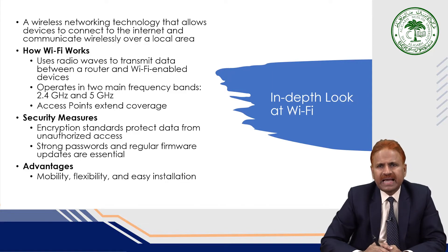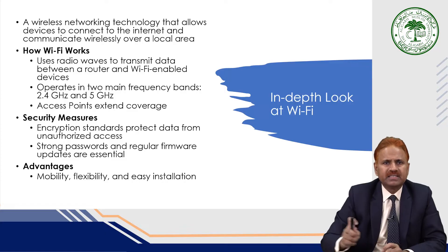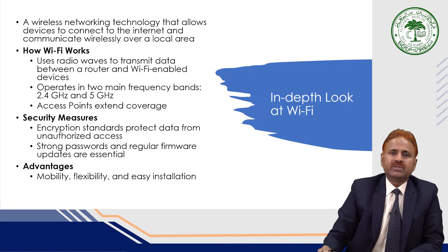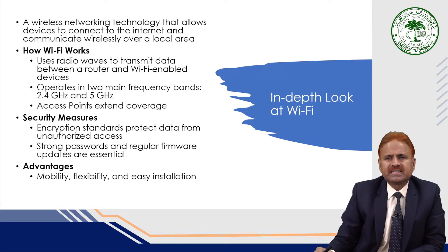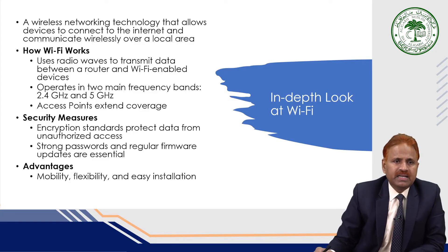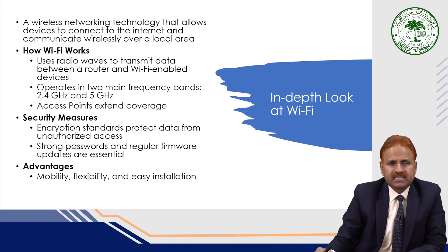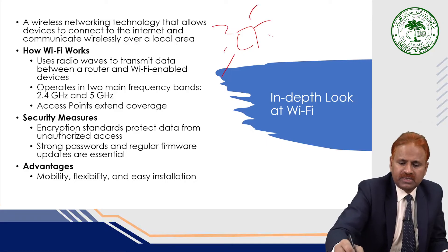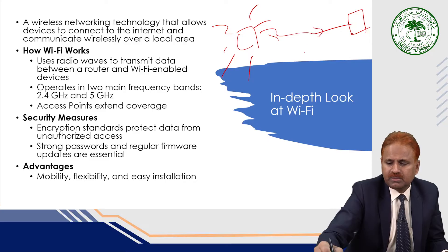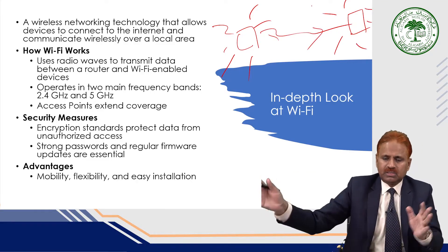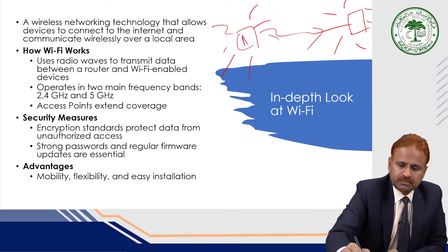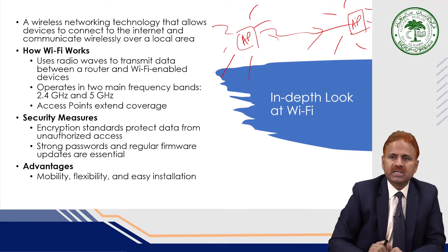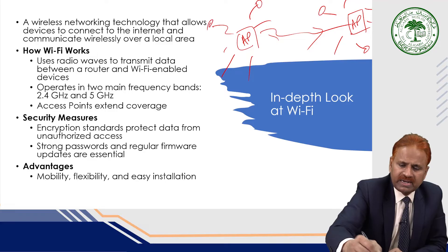Now for an in-depth look at Wi-Fi: it is a wireless networking technology that allows devices to connect to the internet and communicate wirelessly over a local area, also known as a wireless LAN. Wi-Fi uses radio waves to transmit data between a router and Wi-Fi-enabled devices. It operates in two main frequency bands — 2.4 GHz and 5 GHz — and access points are used to extend coverage, connecting various devices wirelessly.